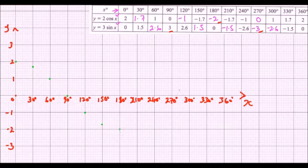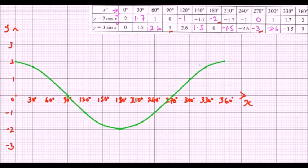210, we have minus 1.7. We have 240, is minus 1. We have 270, we have y is 0. We have 300, we have 1. At 330, we have 1.7. We have 360, back to 2. So these are the values of our function y equals 2 cos x.